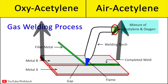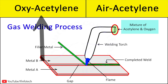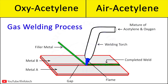There are two types of gas welding processes: oxyacetylene gas welding and air acetylene gas welding. In the oxyacetylene gas welding process, a mixture of oxygen and acetylene is used to join metal parts. This mixture burns as a focused flame having a temperature of more than 3500 degrees centigrade.